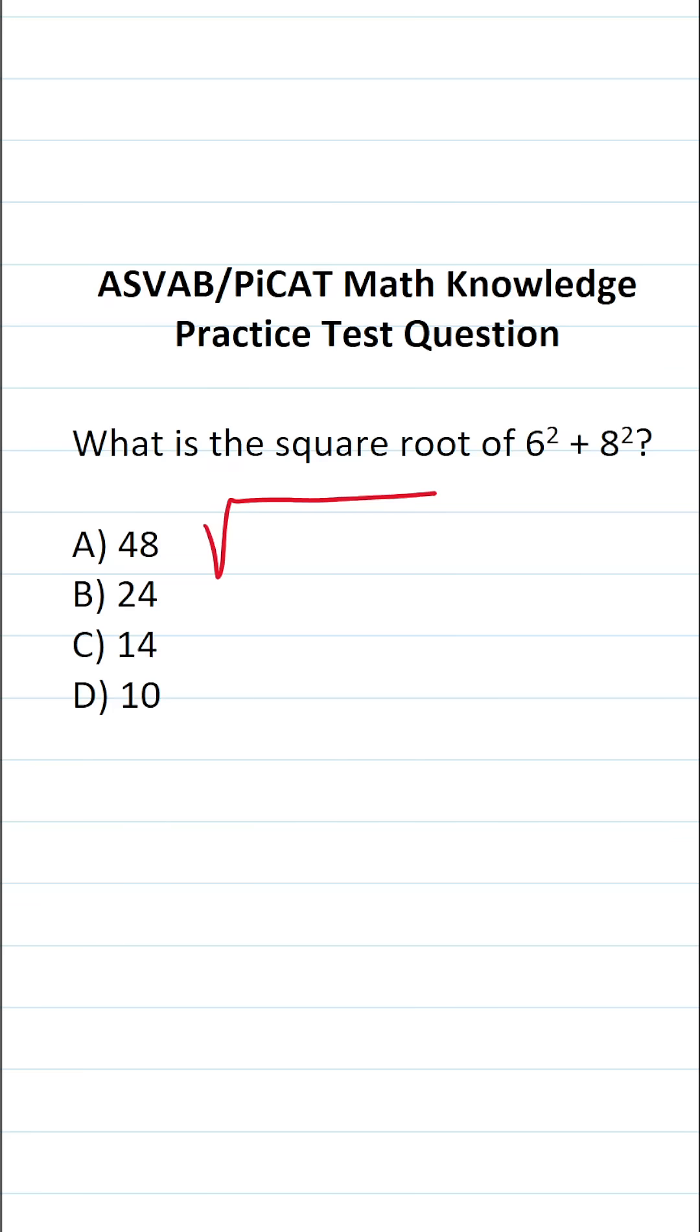So we want to know the square root of 6 squared plus 8 squared. The first thing we have to figure out is what 6 squared is. 6 squared is the same thing as 6 times 6, which is 36.